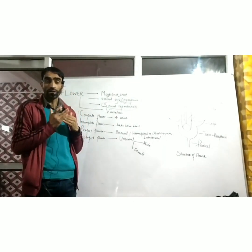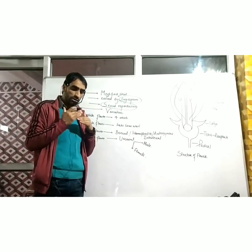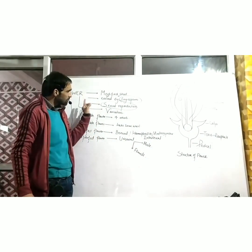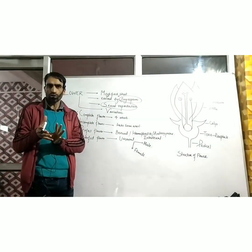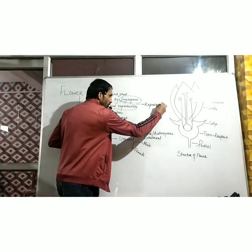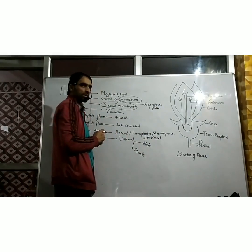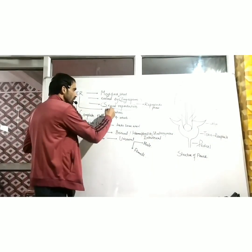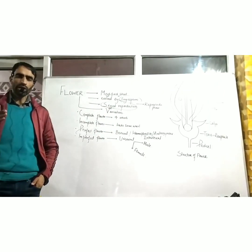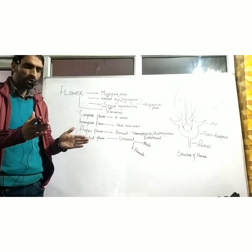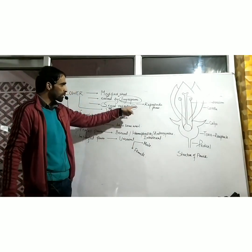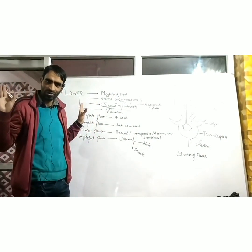Angiosperms are the most evolved group in kingdom Plantae — they are the crème de la crème of plant evolution. A flower is a modified shoot evolved by angiosperms, but only during the reproductive phase, only during the mature phase, only after the vegetative phase — for the purpose of performing the sexual mode of reproduction.